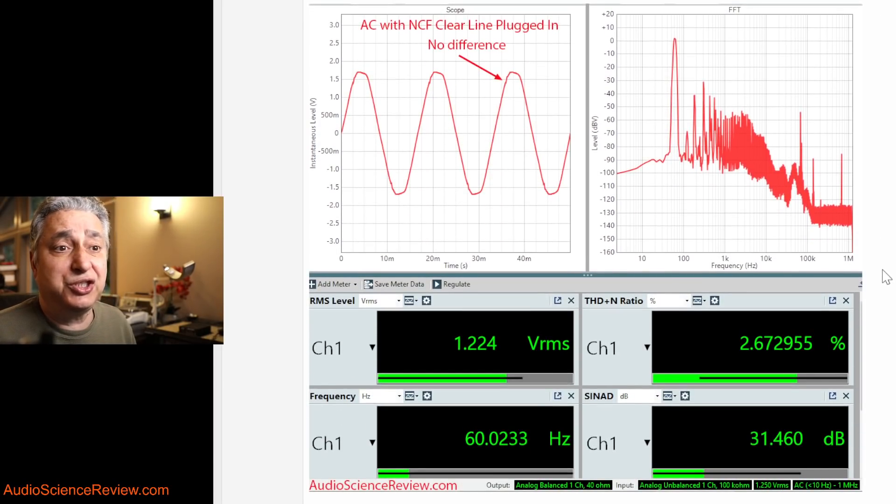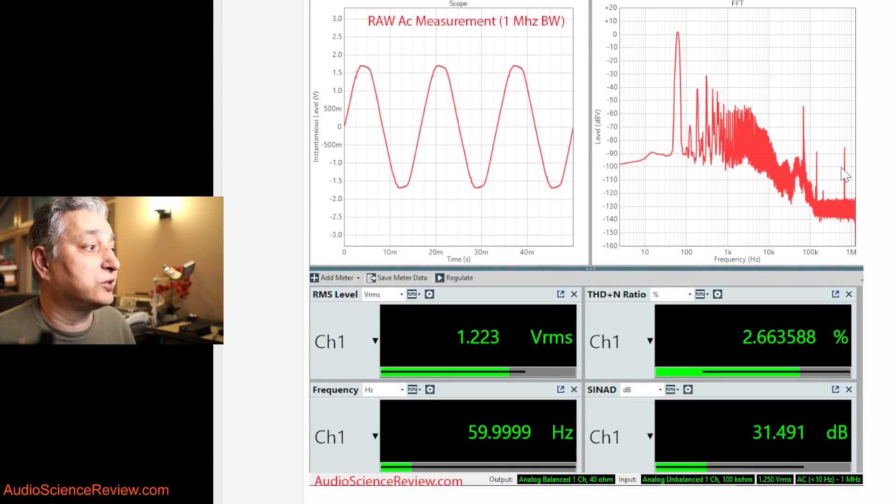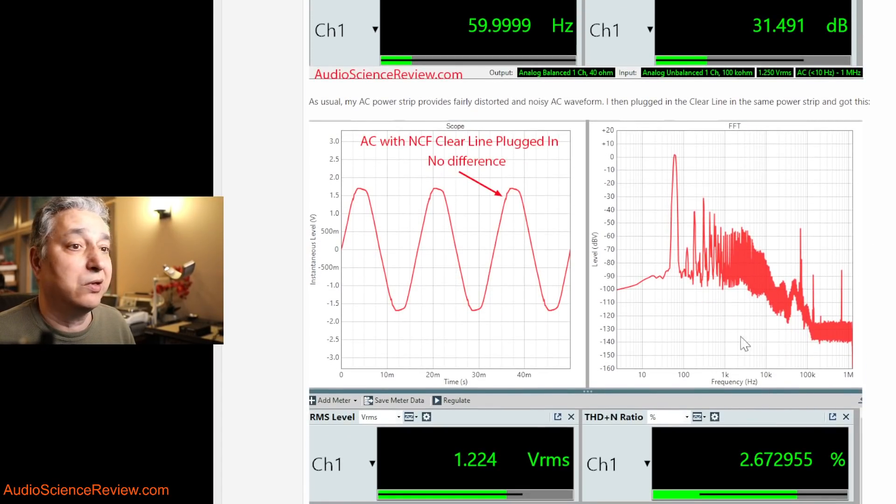So I went ahead and without changing anything, I just plugged this in and took another snapshot of the analyzer output. We see that the sine wave remains the same, the voltage is basically the same. These digits vary even if I don't change anything. So 0.1 dB doesn't mean anything, but it was 31 before and it's 31 now. We had these junk spikes over here, all unwanted, and no difference.